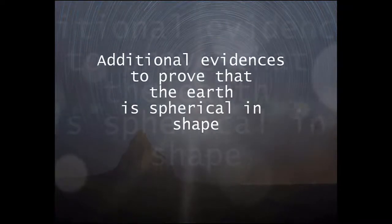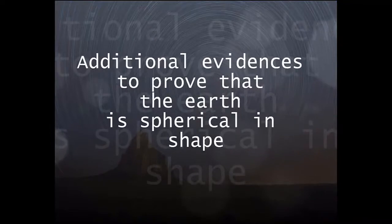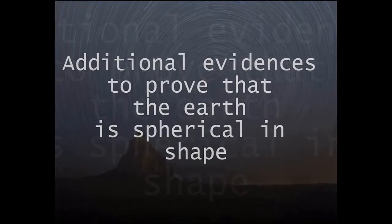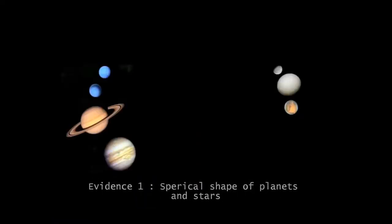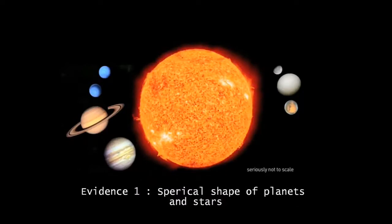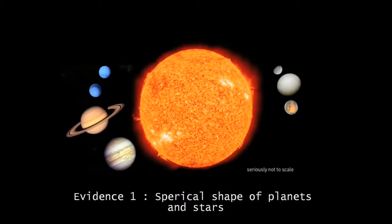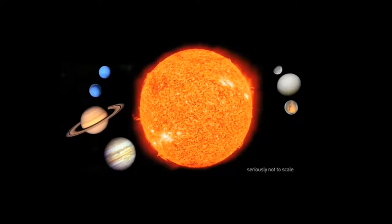Now we learn the additional evidences to prove that the Earth is spherical in shape. Evidence 1: All other planets and stars you have ever seen are round and there is no reason to indicate the Earth should be of any different.